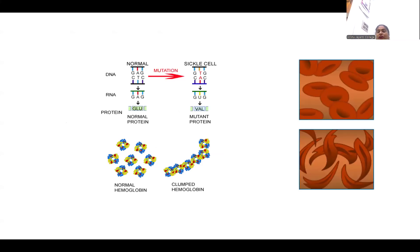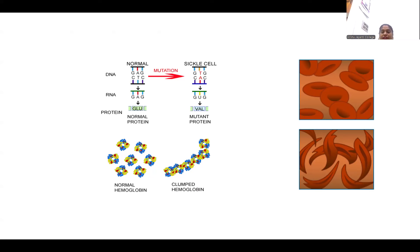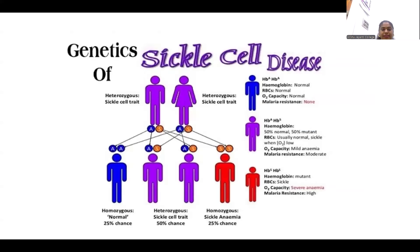This picture depicts the shape of the RBCs in the normal condition as well as in the mutated condition. In the normal condition, the RBCs are circular in shape because the beta polypeptide chain in the sixth position has the amino acid glutamic acid. But in the mutated disease condition, glutamic acid is replaced by valine, which leads to clumped hemoglobin. Clumped hemoglobin leads to the sickle shape of the RBCs.